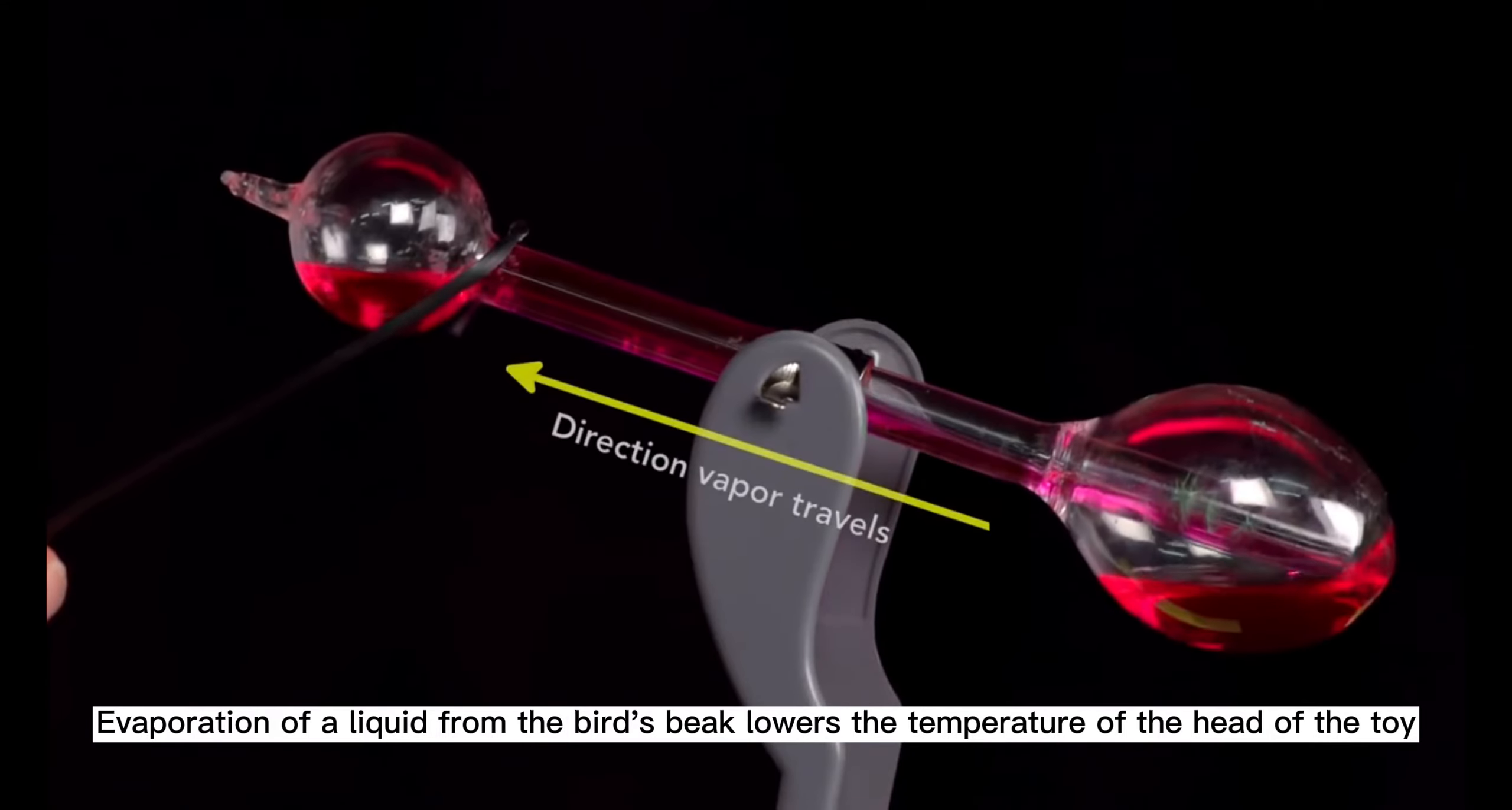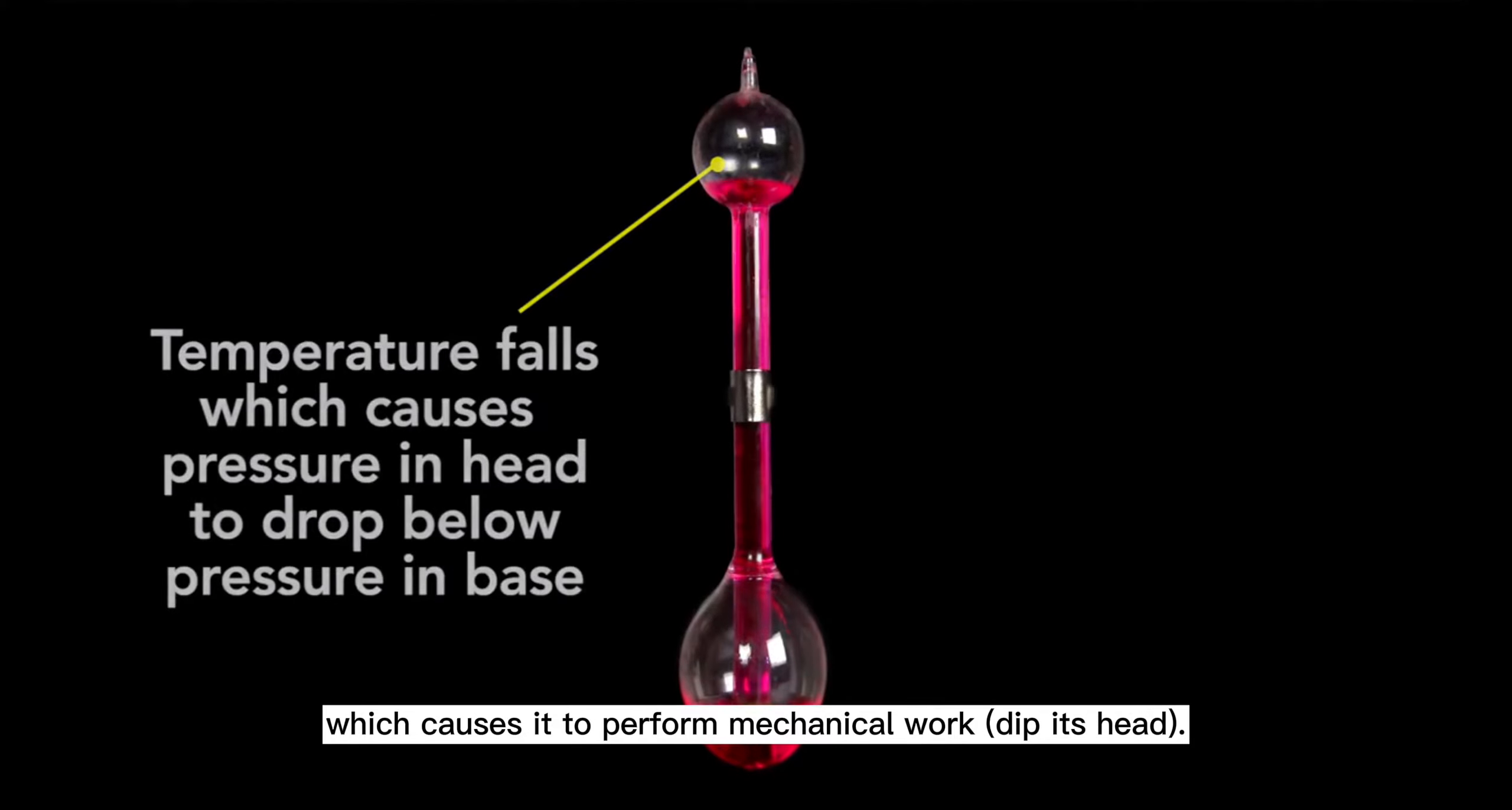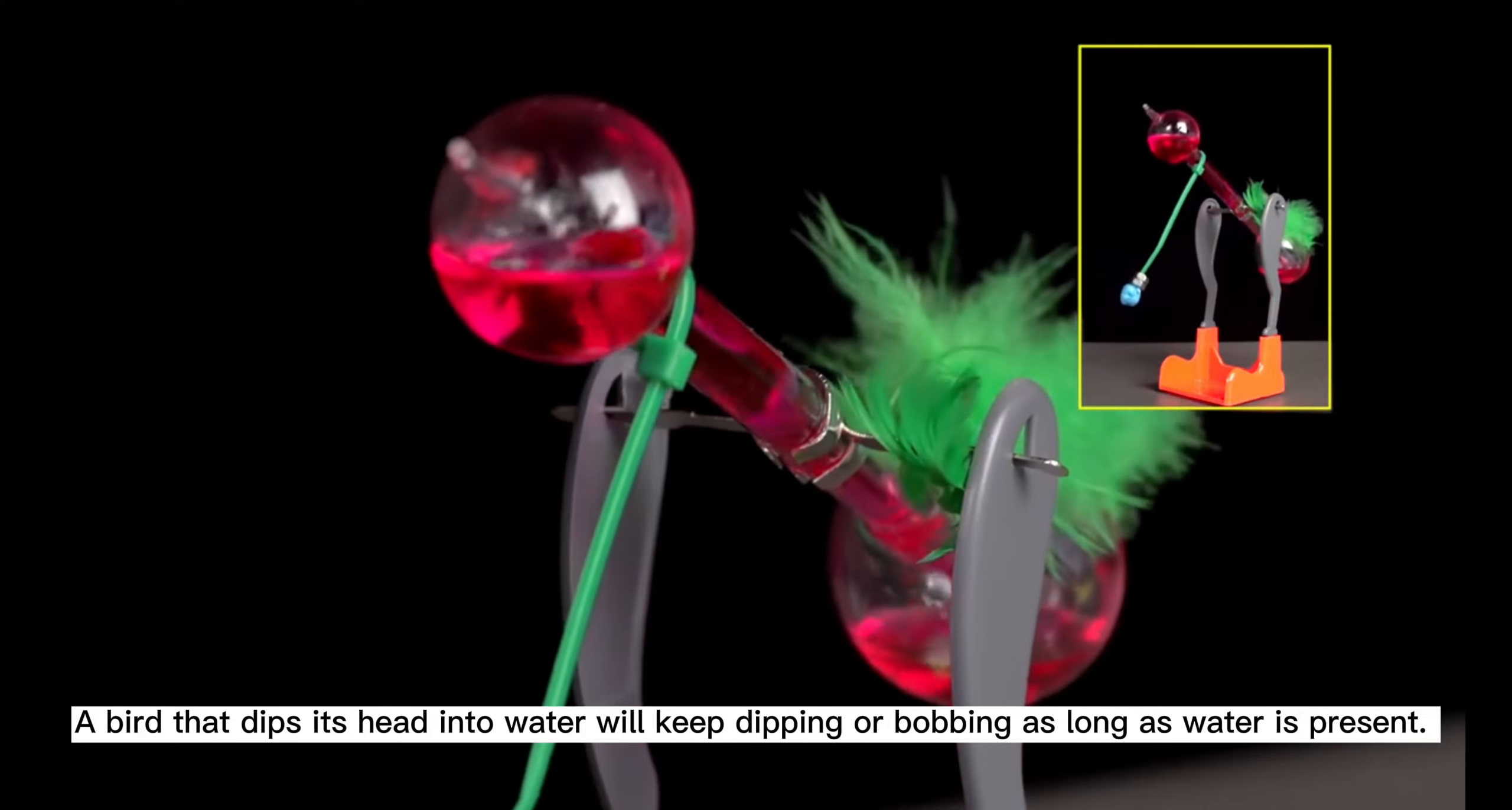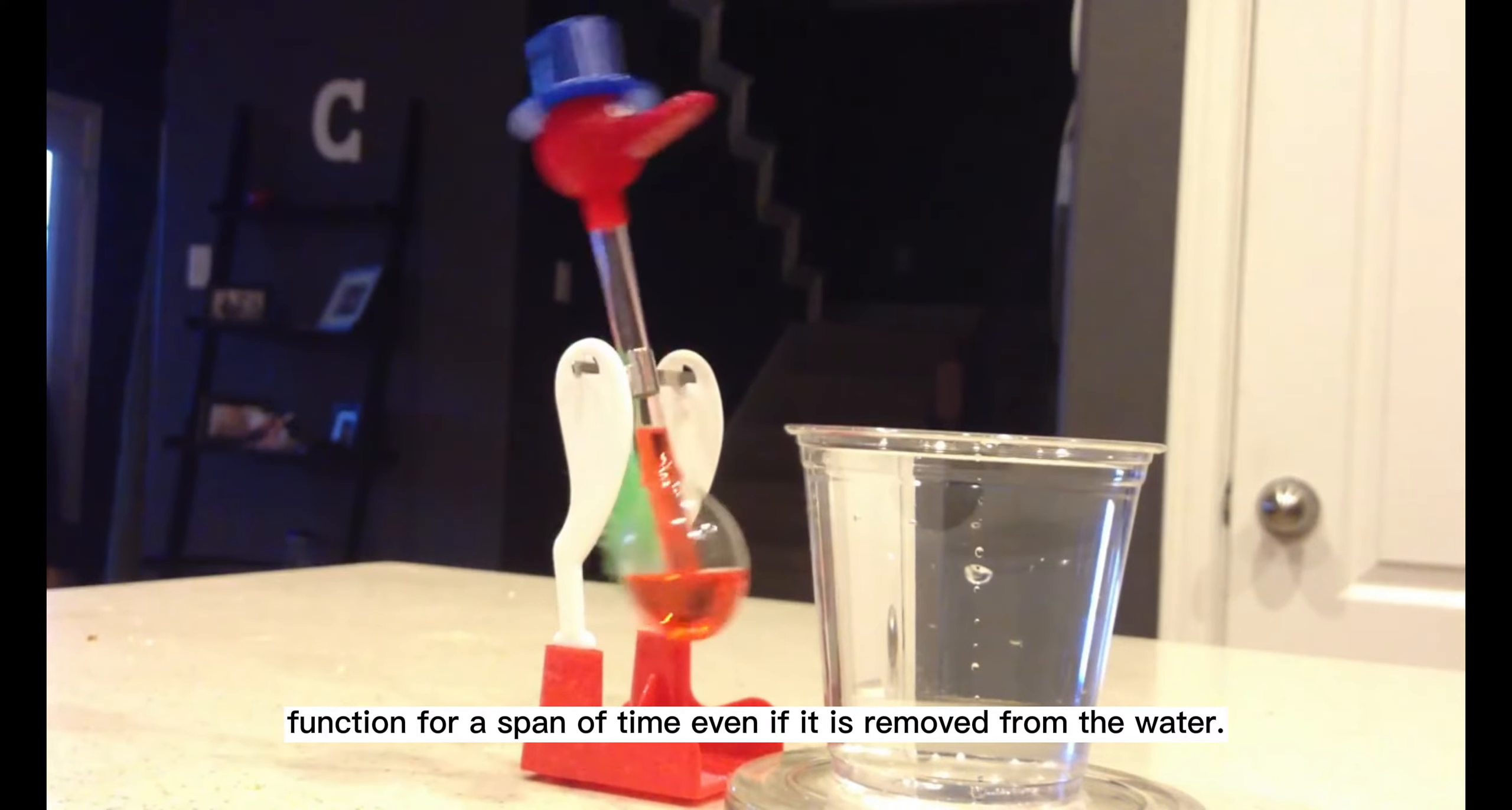Evaporation of liquid from the bird's beak lowers the temperature of the head of the toy. The change in temperature creates a pressure differential inside the body of the bird, which causes it to perform mechanical work and dip its head. A bird that dips its head in the water will keep dipping or bobbing as long as water is present. In fact, the bird works as long as its beak is damp, so the toy continues to function for a span of time even if it is removed from the water.